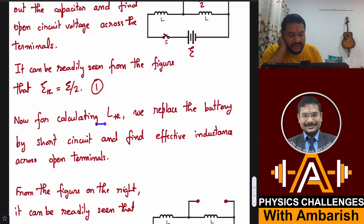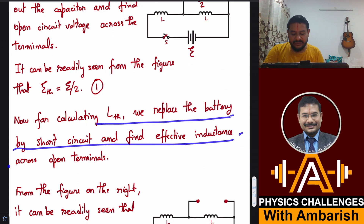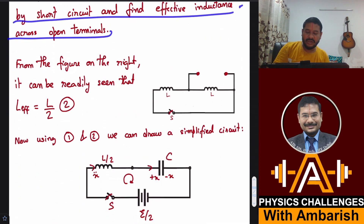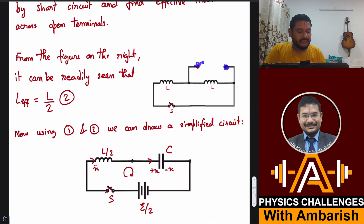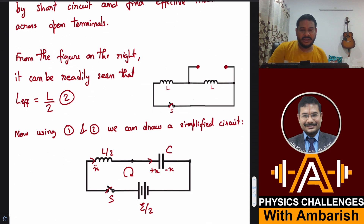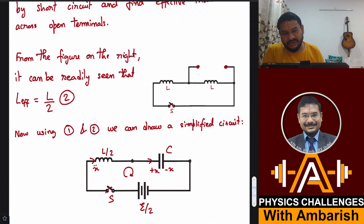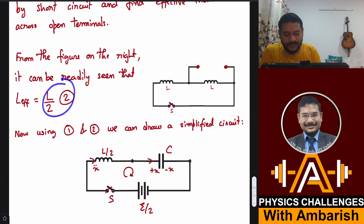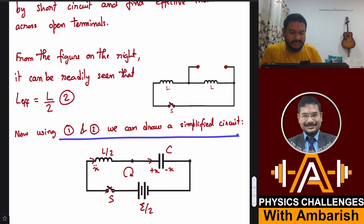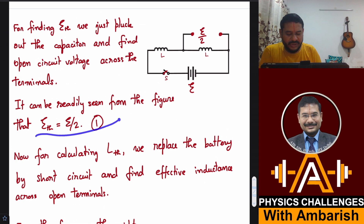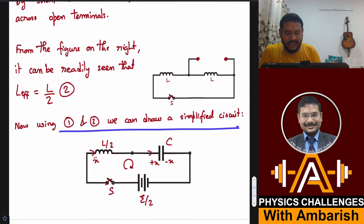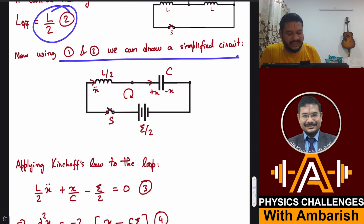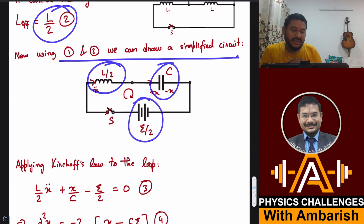For calculating L Thevenin, we replace the battery by a short circuit and find the effective inductance across the open terminals. With the battery shorted, L and L are in parallel, giving L/2 — effective inductance in parallel behaves just like effective resistance in parallel. So L Thevenin = L/2. Using these results, we draw the simplified circuit: one battery E/2, inductance L/2, and capacitor C.